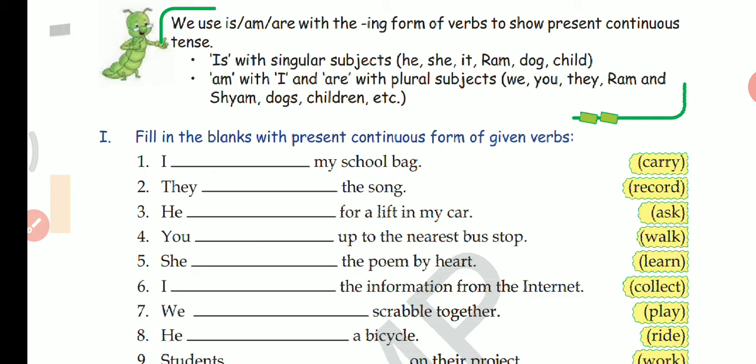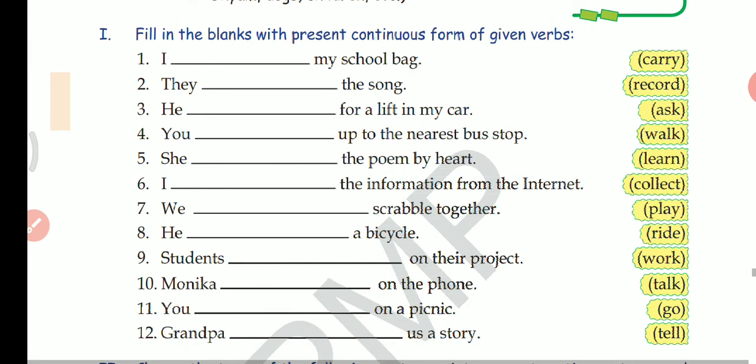Now let us look at the exercises. Fill in the blanks with present continuous form of given verbs. Here 12 sentences are given and you have to fill in the blank using present continuous form of the verb. The verbs are given in the bracket. First one: I dash my school bag, carry. So how will you write? I carrying my school bag? No. With this continuous you have to use some helping verb. With I we use 'am'. So I am carrying my school bag. Second: They dash the song. They is plural, so we will use 'are'. So they are recording the song.